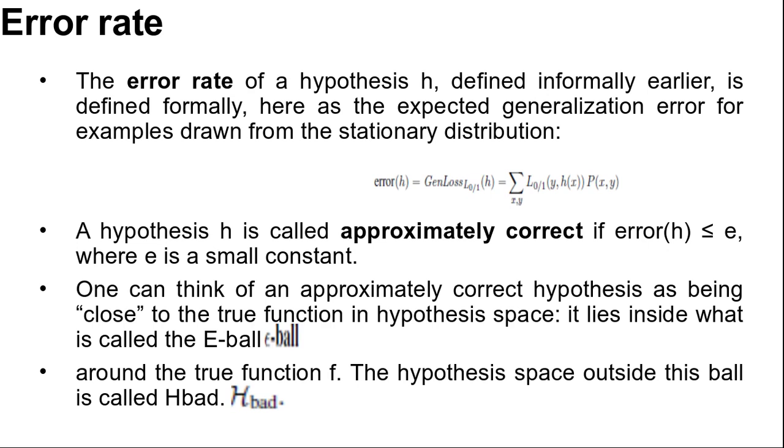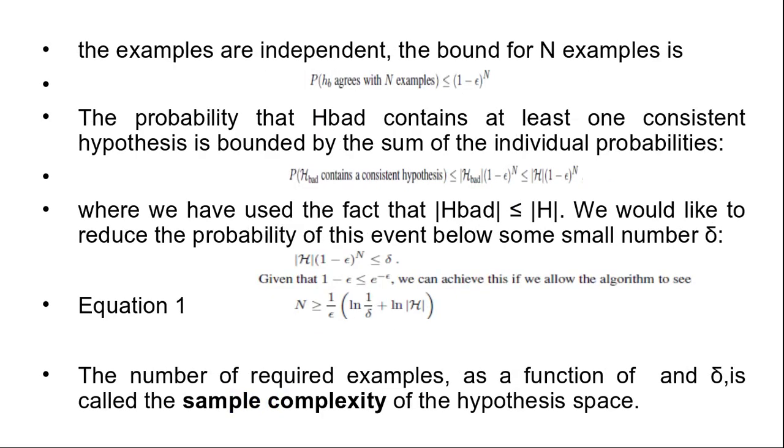Next we can calculate the probability that a seriously wrong hypothesis H in H bad is consistent with the first N examples as follows. We know that error H B is greater than epsilon. Thus the probability that it agrees with a given example is at most 1 minus epsilon. Since the examples are independent, the bound for N examples is probability that H B agrees with N examples is less than or equal to 1 minus epsilon to the power N.